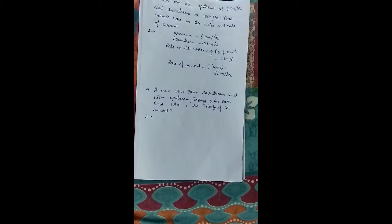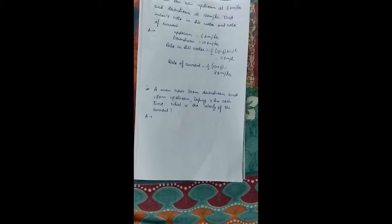Now the second question we are solving here is a man rows 30 km downstream and 18 km upstream taking 5 hours each time. What is the velocity of current?